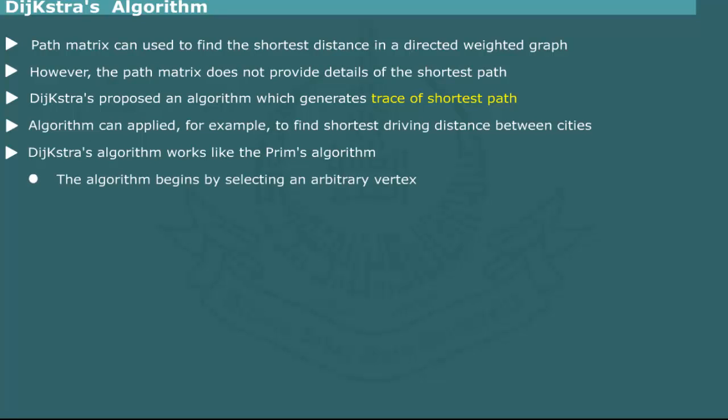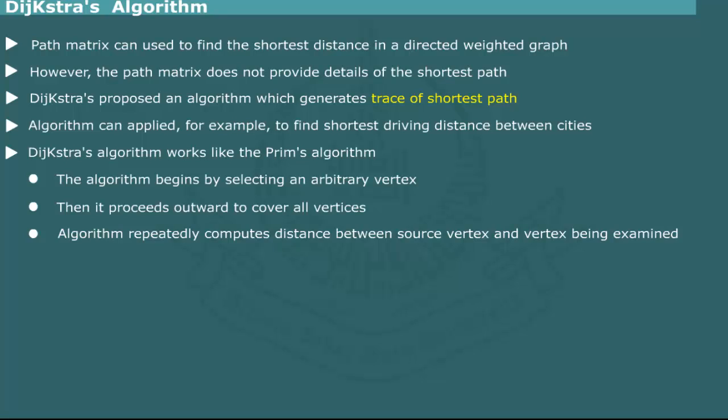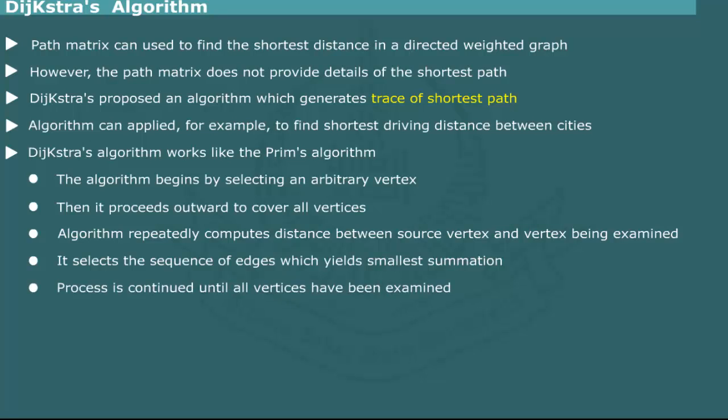Dijkstra's algorithm works like the Prim's algorithm. It begins by selecting an arbitrary vertex and proceeds outward to cover all vertices. Unlike the Prim's algorithm, however, Dijkstra's algorithm repeatedly computes the distance between a source vertex and the vertex being examined and selects the sequence of edges which yields the smallest summation. This process is continued until all the vertices have been examined.